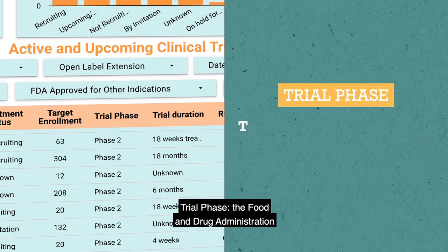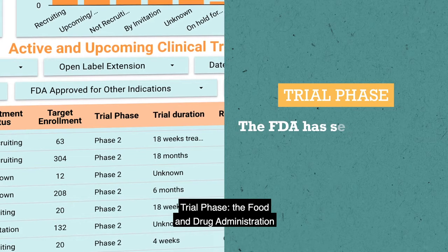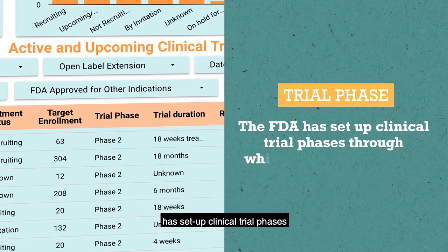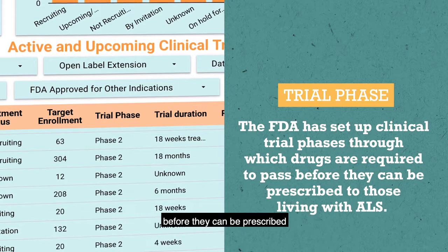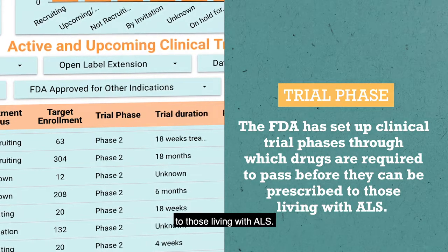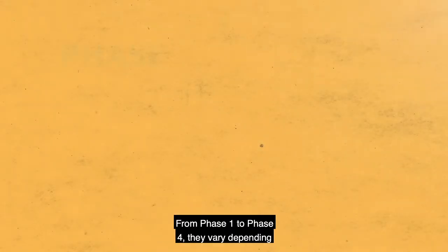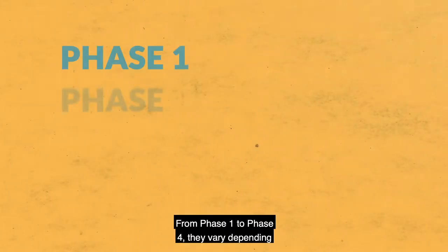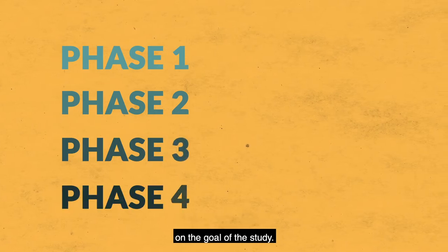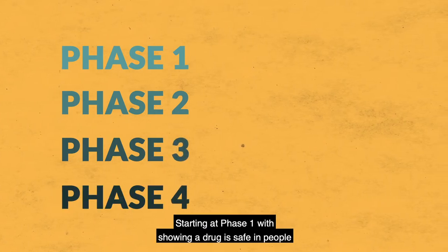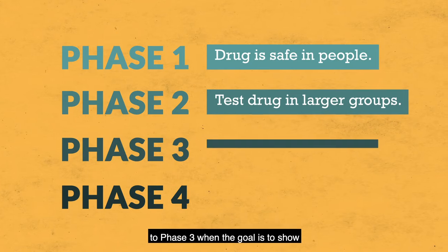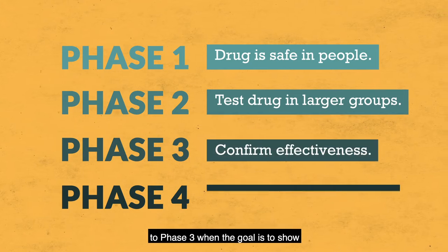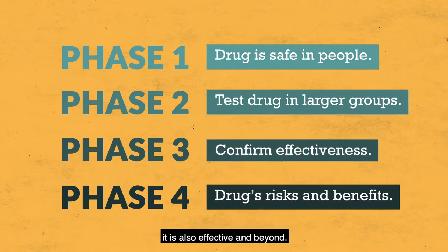Trial phase: The Food and Drug Administration has set up clinical trial phases through which drugs are required to pass before they can be prescribed to those living with ALS. From phase 1 to phase 4, they vary depending on the goal of the study — starting at phase 1 with showing a drug is safe in people, to phase 3 when the goal is to show it is also effective and beyond.